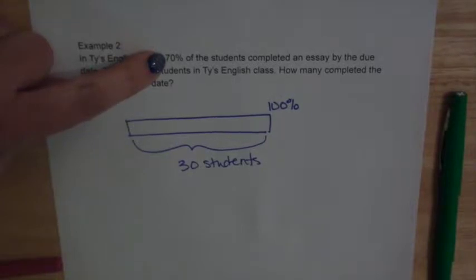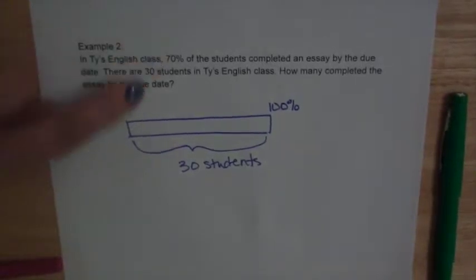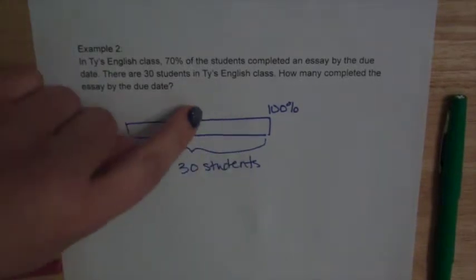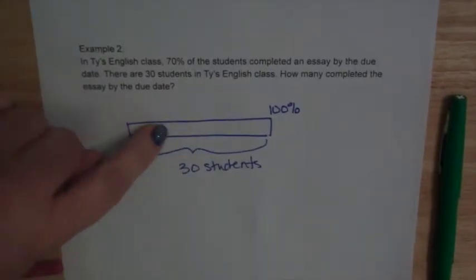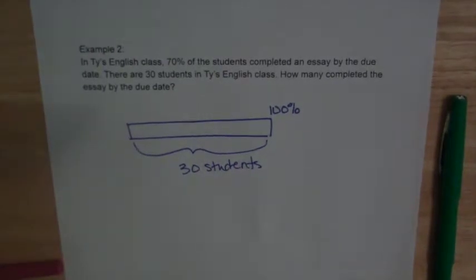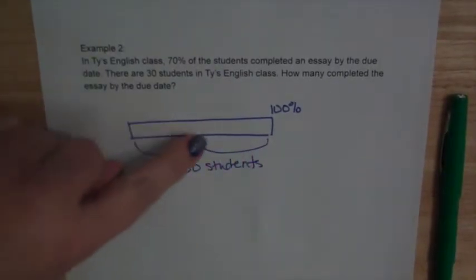So this time we're looking for 70%, but 70% is not something I can chunk this into, because if I even did it by 2, and I had 70 and 70, that would be more than my 100. So I need to find another way to chunk this.